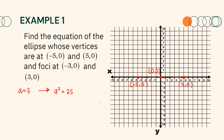Moreover, the distance of the foci to the center is c units. Plotting our foci, we have (−3, 0) and (3, 0). Looking at the distance of our foci to the center, we can say that c is equal to 3. Hence, it follows that c² is equal to 9.